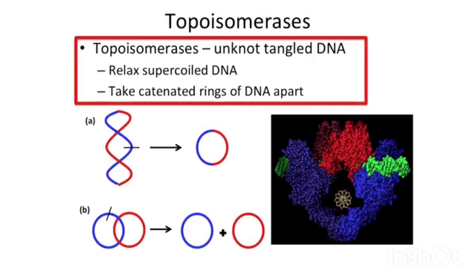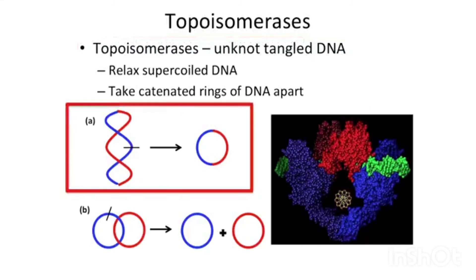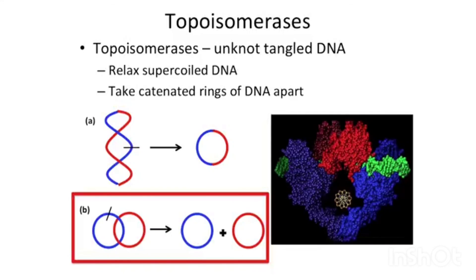We also see roles for topoisomerases outside of replication. In some cases, DNA can become supercoiled. This drawing depicts a circular piece of DNA supercoiled on the left — treating that with a topoisomerase relaxes it to circular DNA. Sometimes DNA is formed where two circular pieces pass through each other; these are called catenated rings. Treating these with topoisomerases allows the rings to become separated. On the right, you can see the structure of topoisomerase surrounding DNA, protecting it during the process. This is important because a mistake in topoisomerase results in a break in DNA, so a substantial part of its structure stabilizes DNA during this process.